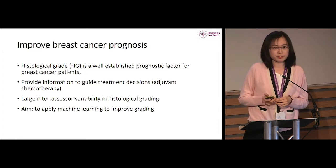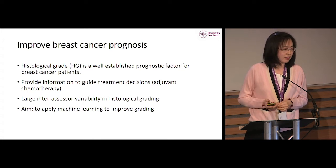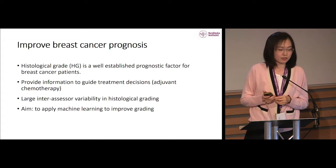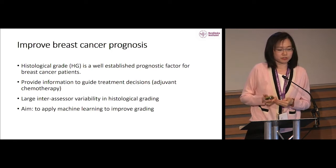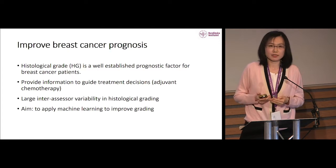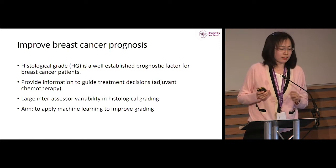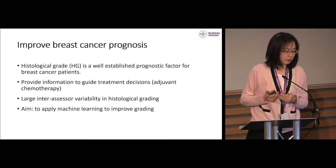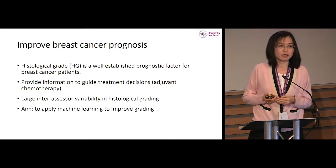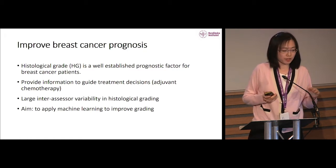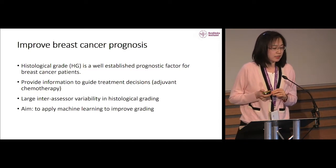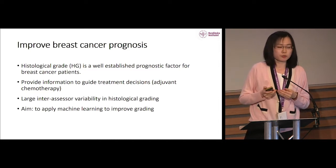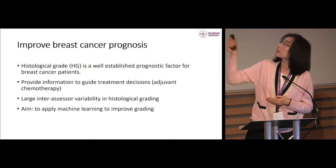In this study, we especially focus on improving breast cancer prognosis. Histological grade is a well-established prognostic factor for breast cancer patients and can guide treatment decisions. For instance, if patients have a lower grade, they may be spared from more toxic chemotherapy. However, pathologists have large inconsistencies in this grading. The aim of our study is to apply machine learning to improve grading and further improve patient prognosis.